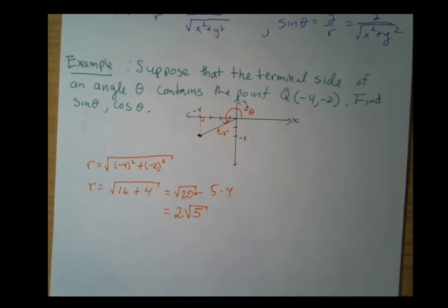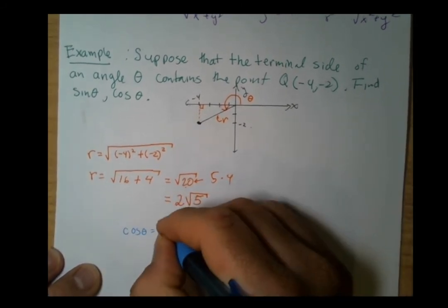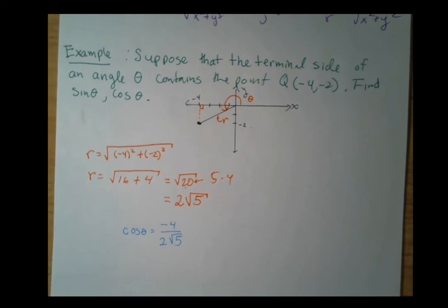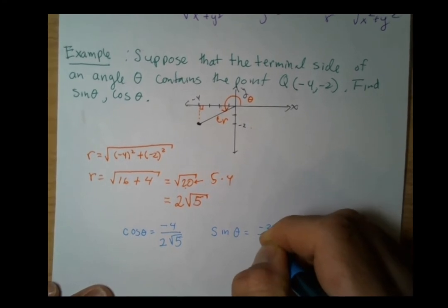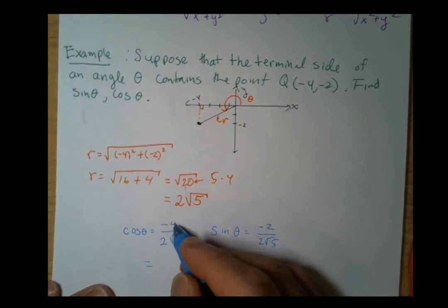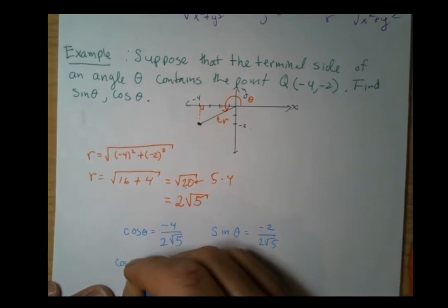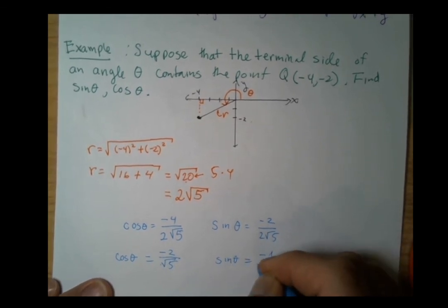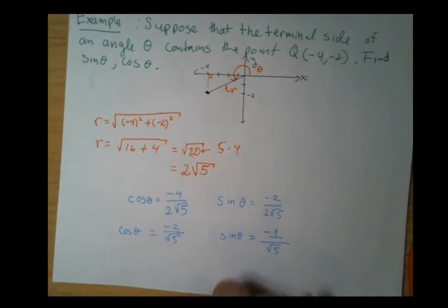Now we've found r, and we simply apply the theorem. Cosine theta is the x-value, -4, over r, which is 2√5. For sine theta, we get -2 over 2√5. Reducing these fractions to lowest terms: -4/2 reduces to -2/√5, and -2/(2√5) reduces to -1/√5.